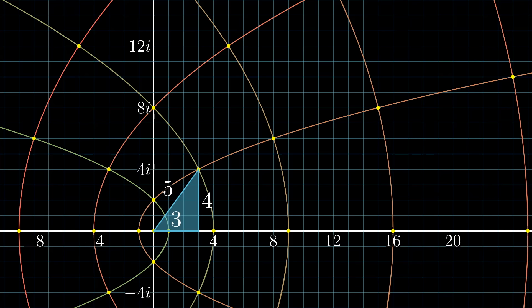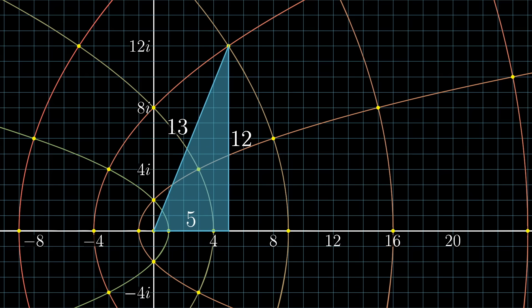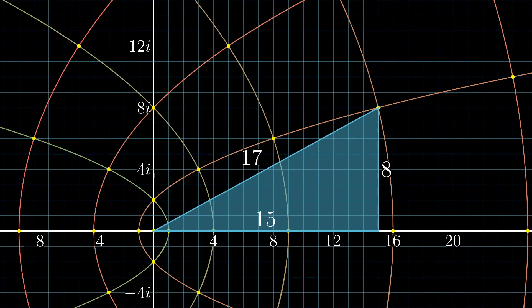That is, if you draw a triangle whose hypotenuse is the line between any one of these points and the origin, and whose legs are parallel to the axes, all three side lengths of that triangle will be whole numbers.